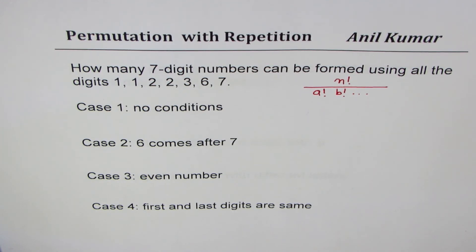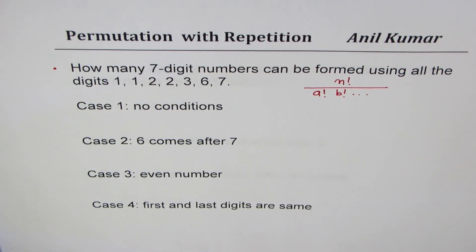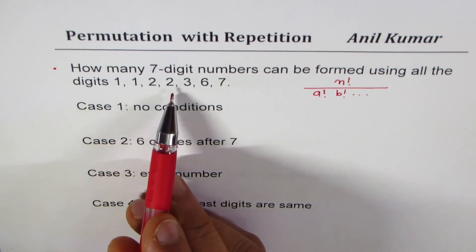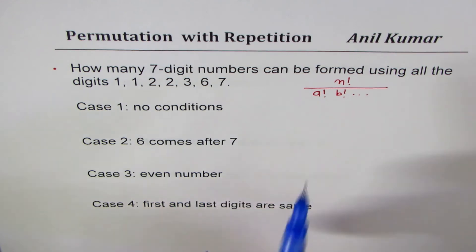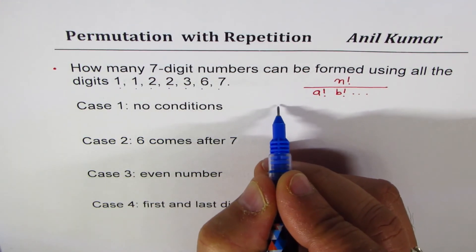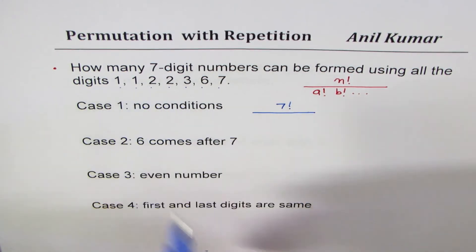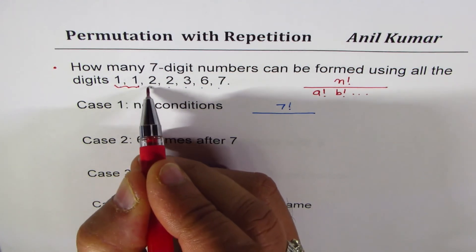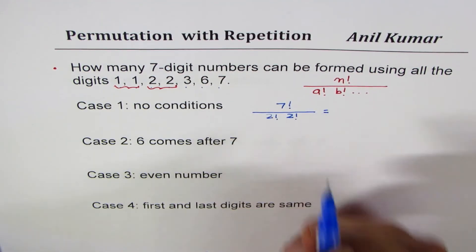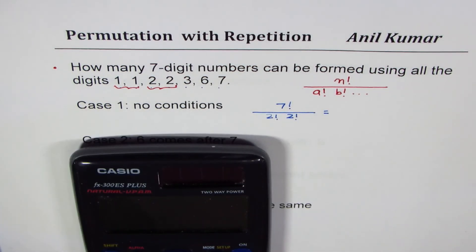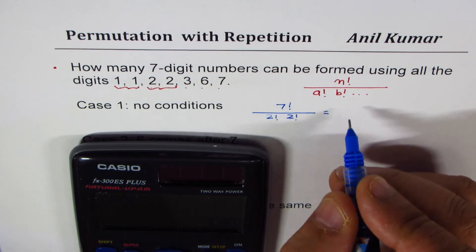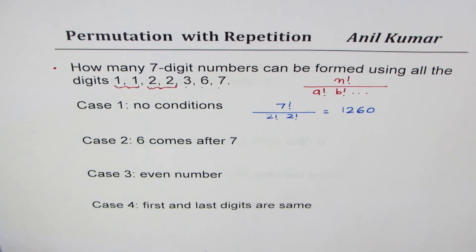Let's begin with our first question. We'll have three questions in this video. The first question is: how many seven-digit numbers can be formed using all the digits 1, 1, 2, 2, 3, 6, and 7? Case 1: no conditions at all. There are seven elements, so 7 factorial comes in the numerator, divided by 2 factorial for the two 1's and 2 factorial for the two 2's, giving the answer 1260.